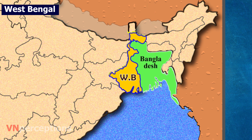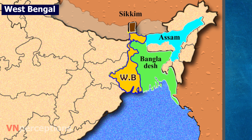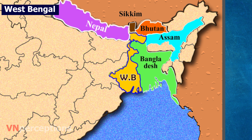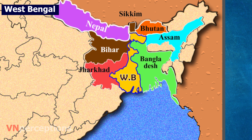Bangladesh lies to its east. Assam, Sikkim and Bhutan to the northeast. Nepal towards northwest. Jharkhand and Bihar towards west. And Odisha towards southwest.